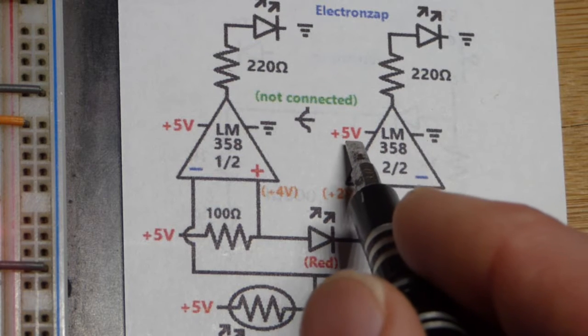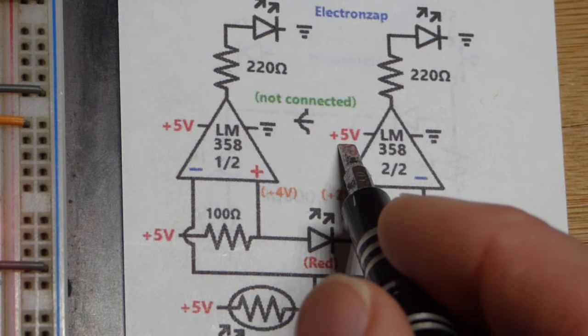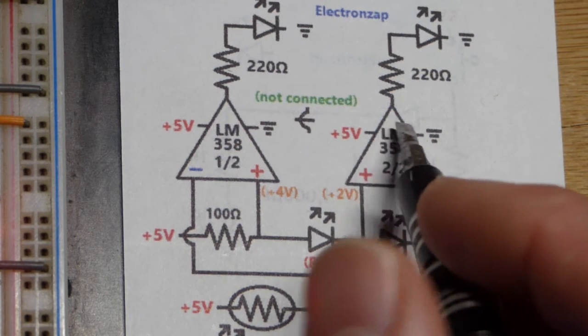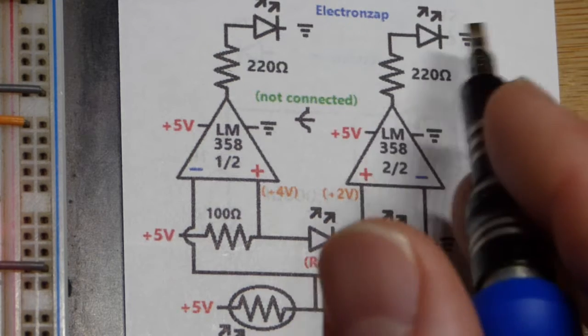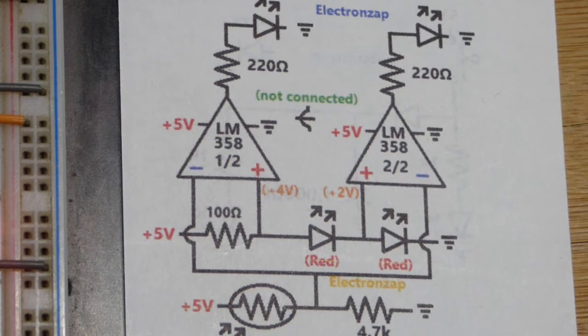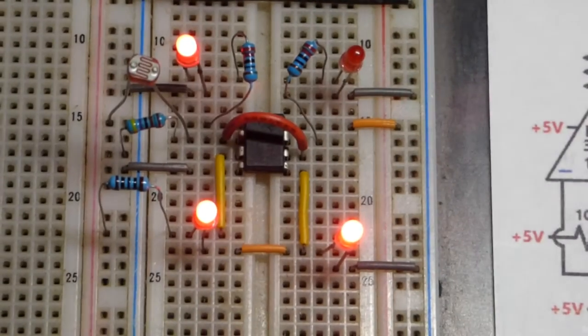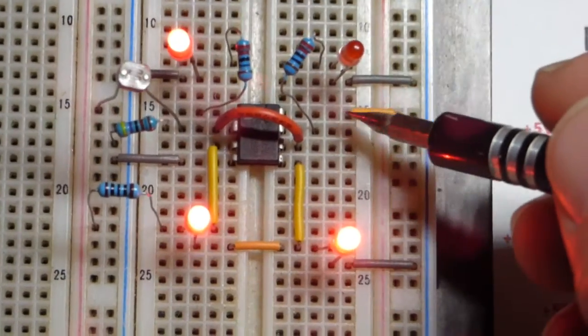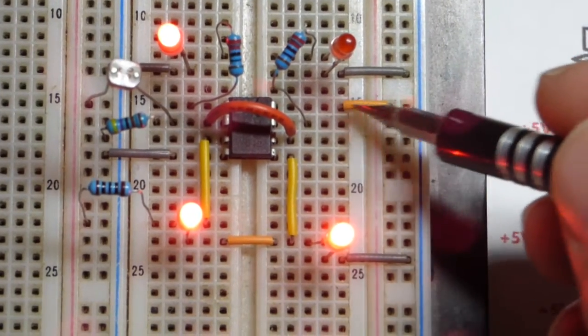These op-amps, by the way, they connect to ground really good - you can get zero volts at the output. But not to the positive supply, it usually falls about a volt and a half short. So we're probably getting like three and a half volts coming out when the LEDs are lit up, just thought I would point that out.